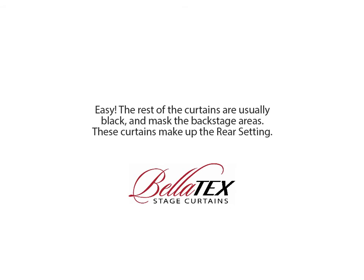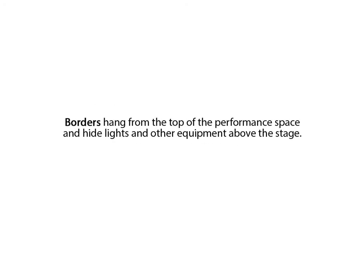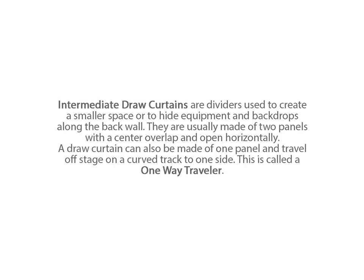The rest of the curtains are usually black and mask the backstage areas. These curtains make up the rear setting. Borders hang from the top of the performance space and hide lights and other equipment above the stage. Legs are tall, narrow curtains which hide offstage areas and provide space for entrances and side lights. Intermediate draw curtains are dividers used to create a smaller space or to hide equipment and backdrops along the back wall. They're usually made of two panels with a center overlap and open horizontally. A draw curtain can also be made of one panel and travel offstage on a curved track to one side — this is called a one-way traveler. Rear setting curtains can be flat or pleated.